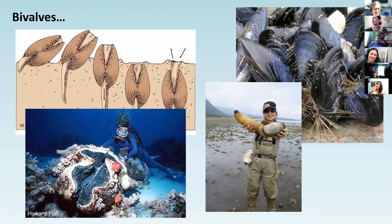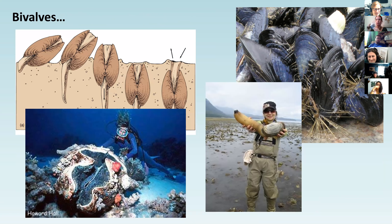Bivalves are your animals like mussels - anything with two shells. Your clams, geoduck clams, giant clams are all called bivalves. One of my favorite bivalves is the oyster - I'll talk about oysters at the end and what I currently do working with them. Bivalves are very important because they provide a lot of structure, particularly here on the west coast where mussels and oysters provide so many benefits to shorelines.